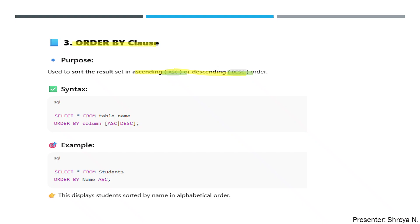The syntax is: SELECT * FROM table_name ORDER BY column_name ASC or DESC — you give one, not both together. This will retrieve students' data alphabetically in ascending order. If you don't specify anything and just write ORDER BY column_name, by default it is ascending.